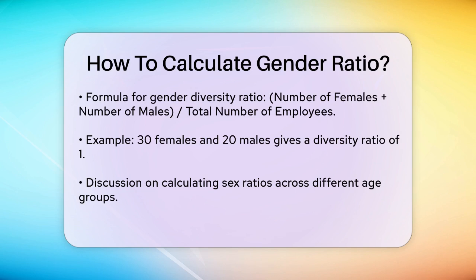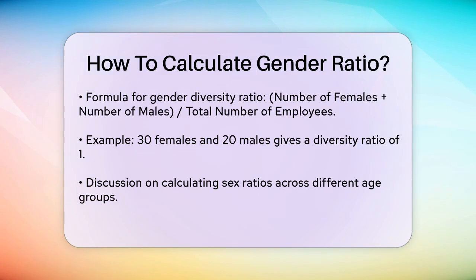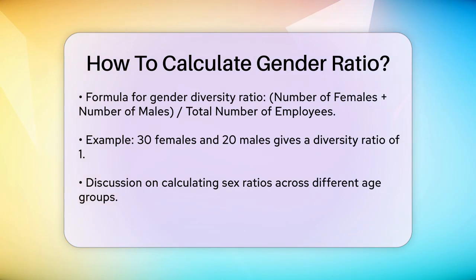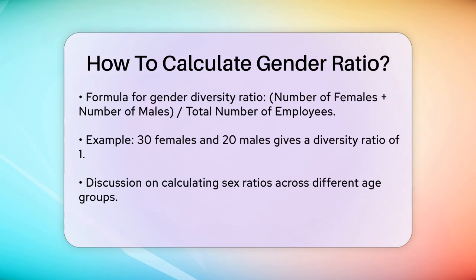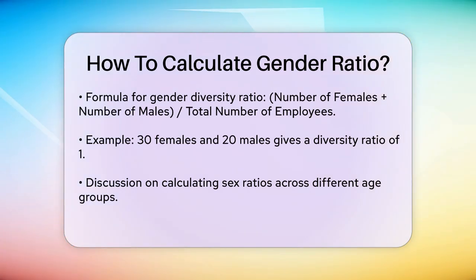This ratio tells you about the group in terms of gender, but it doesn't give you the exact ratio of females to males. When calculating sex ratios across different age groups, the process can be a bit more complex. You need to separate the data for females and males for each age group, and then calculate the ratio for each group. For example, if you're looking at the population of a country, you might find that there are more male infants than female infants, but more females than males in older age groups.